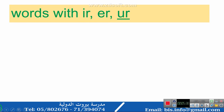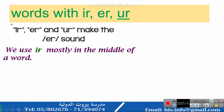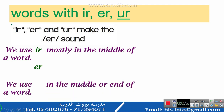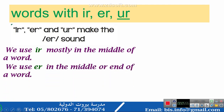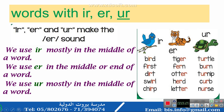Words with IR, ER, and U-R all make the ER sound. We use IR mostly in the middle or end of a word. We use ER in the middle or end of a word. We use U-R mostly in the middle or end of a word. IR words: bird, first, dirt, swirl, chirp. ER words: tiger, fern, otter, herd, letter. U-R words: turtle, burn, turnip, curb, nurse.